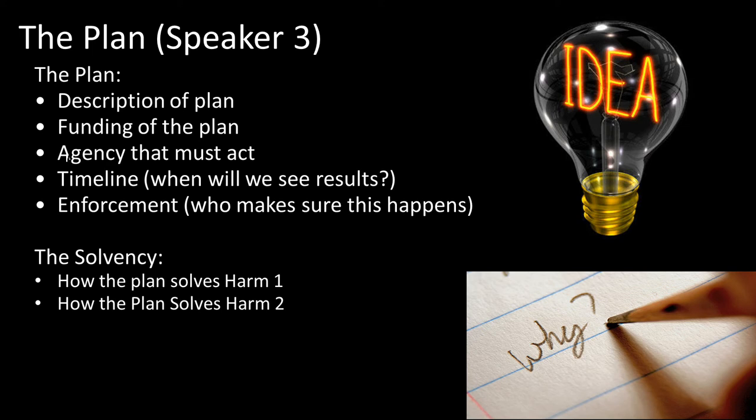At this point, roughly halfway through the presentation, you have laid out a solid stock issues argument covering harms, inherency, the plan, and solvency. You must actually explain and provide sources and evidence that things would get better. If marijuana is legal, people can grow it using sustainable farming practices that won't destroy forests, and fewer people will have their lives destroyed by incarceration for marijuana-related charges.